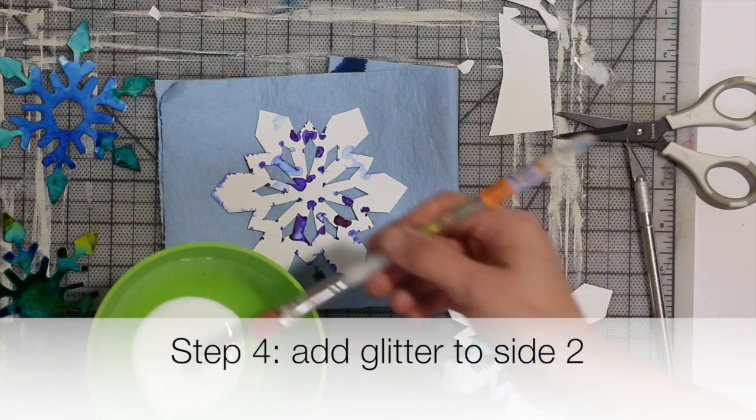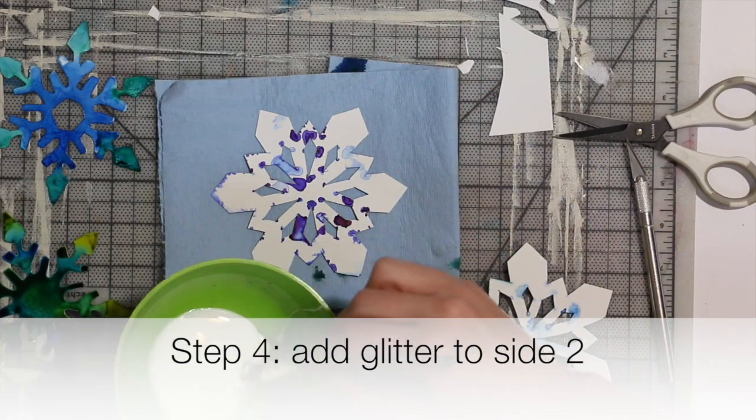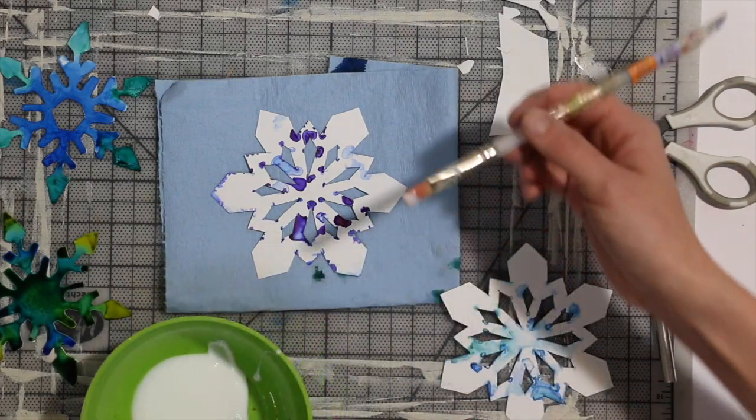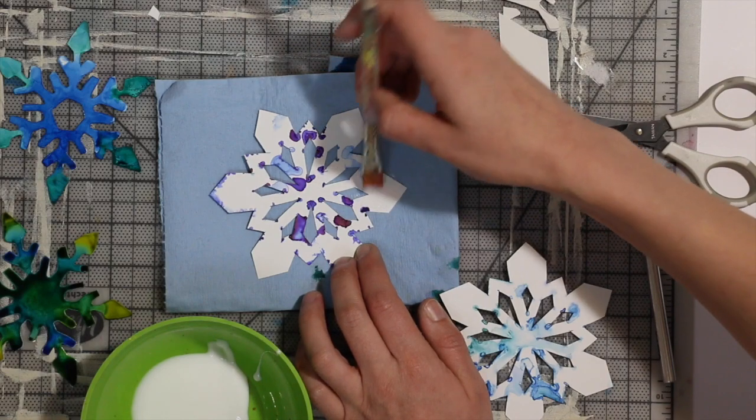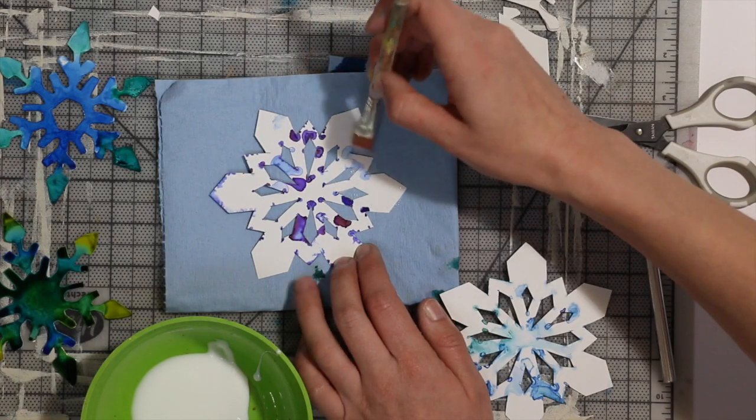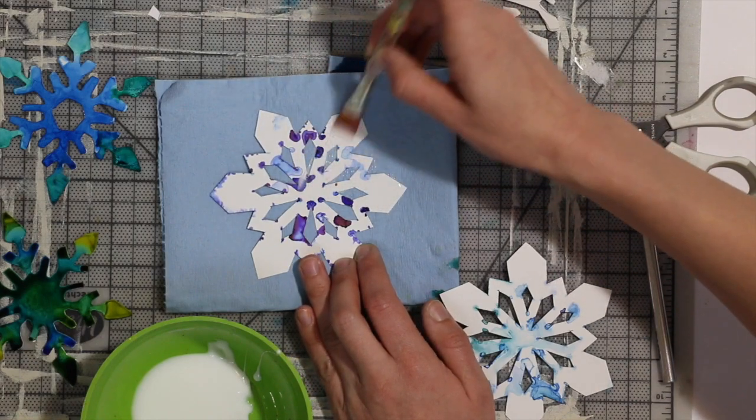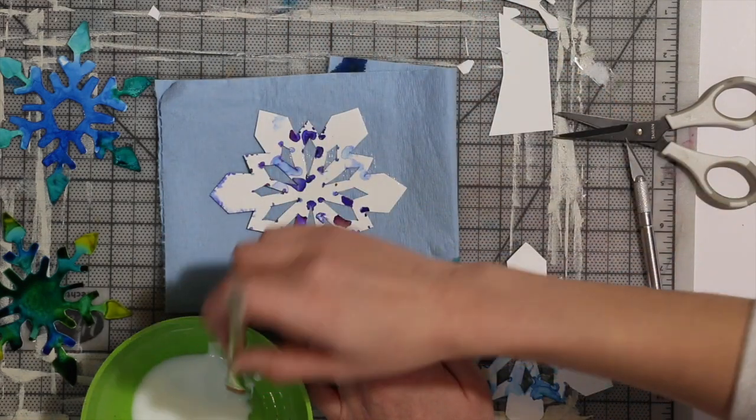I just have some glue here—just Elmer's white glue—and a brush. I'm going to brush the glue along the back of the snowflake. It's good to have either a messy mat or a paper towel so you can just go over the whole thing.